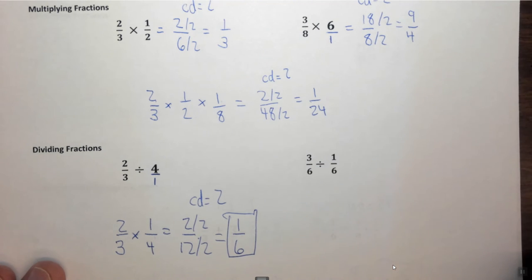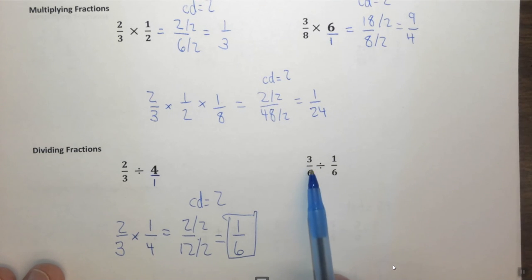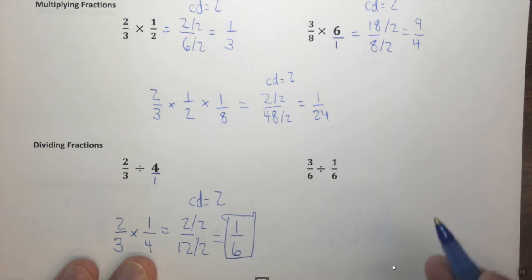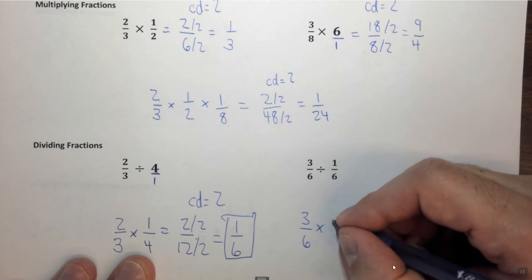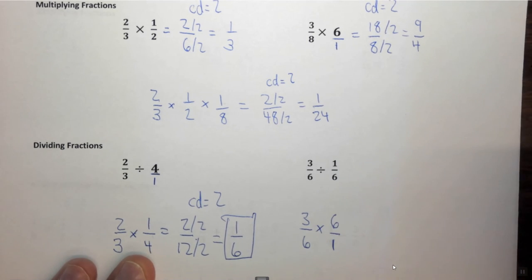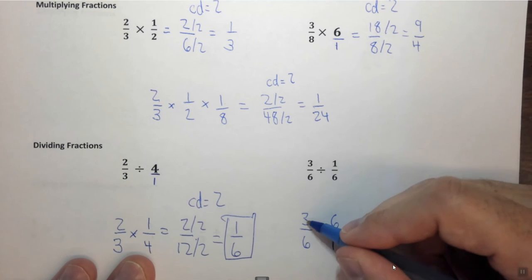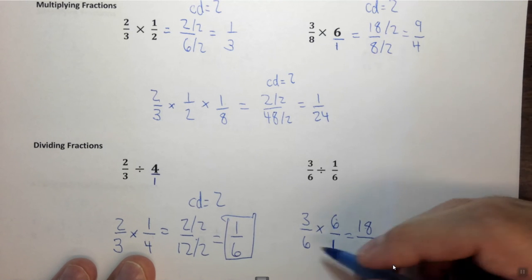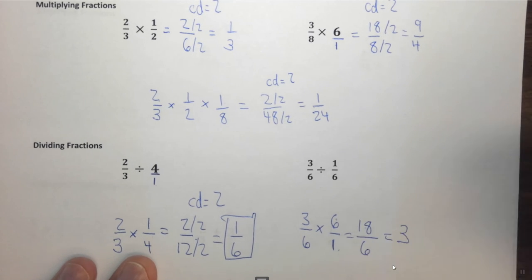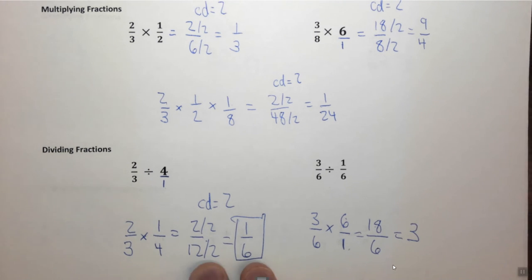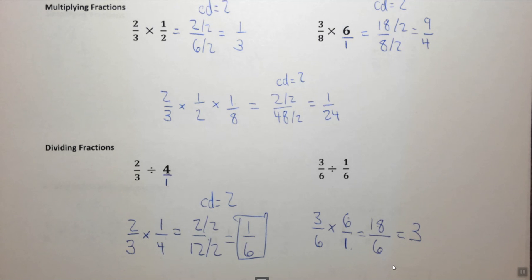Now let's look at another example. We have 3 sixths divided by 1 sixth. Change the divide to a times, and flip 1 over 6 to its reciprocal, 6 over 1. Multiply the tops: 3 times 6 is 18. Multiply the bottoms: 6 times 1 is 6. Since 6 goes evenly into 18, the answer is actually a whole number — 3. So this is a brief review of simplifying fractions, adding and subtracting fractions, and multiplying and dividing fractions. Again, it won't be used directly in chemistry, however we do use dimensional analysis which involves conversion factors, which are essentially fractions. Knowing the rules of fractions can be very helpful.